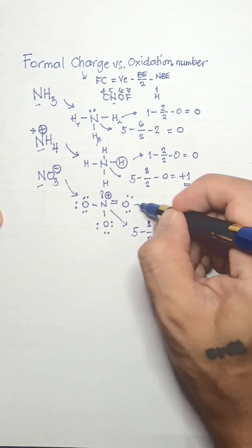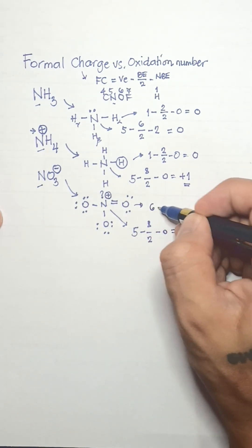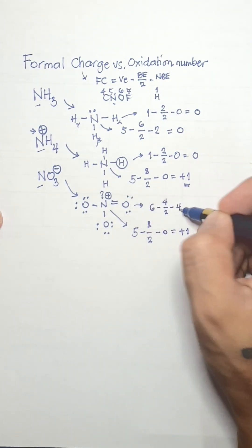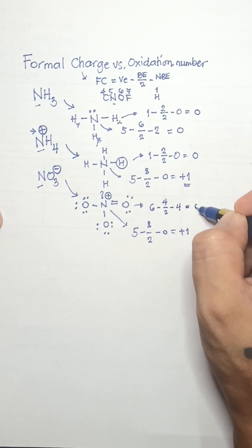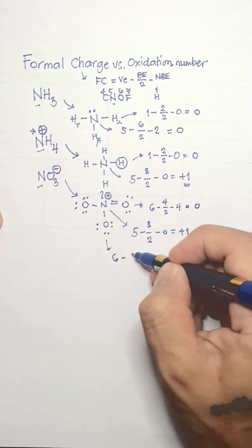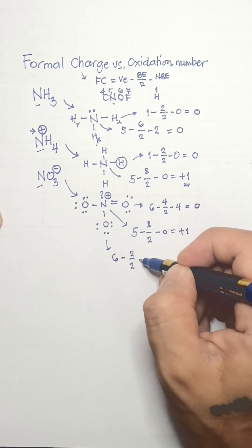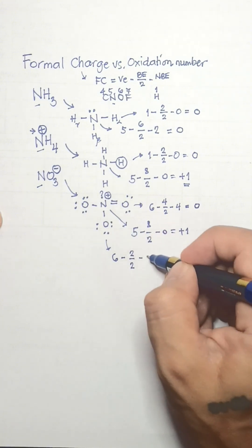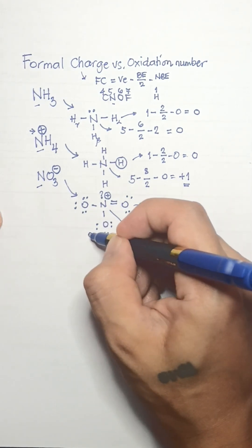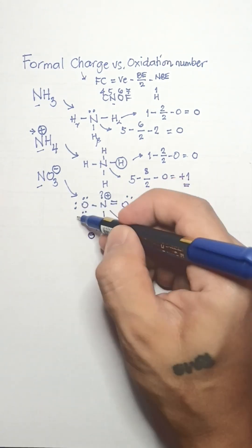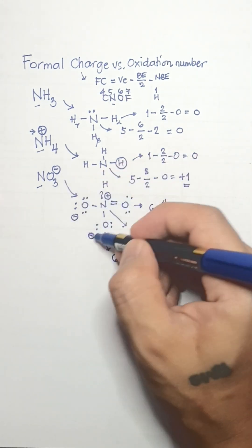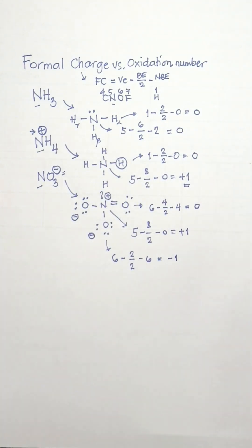For the oxygen atom that is doubly bonded to nitrogen, its valence electrons are 6, minus bonding electrons 4 over 2, minus non-bonding electrons 4. This gives a formal charge of 0. For the other 2 oxygen atoms singly bonded to nitrogen, their formal charge is calculated as 6 minus 2 over 2, minus 6 non-bonding electrons, giving a formal charge of negative 1 for both. The net charge for nitrate ion is negative 1.